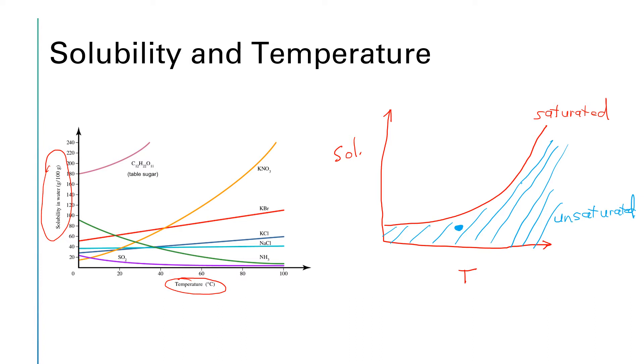And then the area above the curve, let's do that one with orange. The area above the curve would represent a solution that is supersaturated. However, supersaturated solutions are really uncommon, and so chances are that won't really be what's going on.